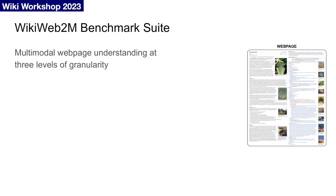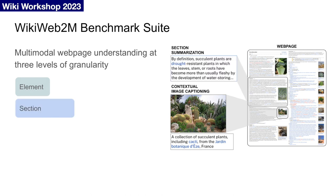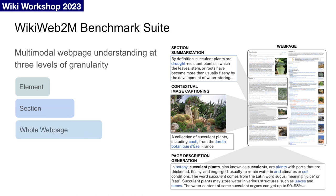With our new WikiWeb2M dataset of multimodal webpages, we need to define a benchmark suite of downstream tasks. Specifically, we define multimodal webpage understanding tasks at three levels of granularity. First, at the element or local level, we propose contextual image captioning, where we need to generate a caption given an image and the remaining webpage context. Then, at an intermediate or section level, we can do section summarization, where we need to generate a single-sentence summary for a section given its content and the remaining webpage context. Lastly, at a global or whole-page level, we can perform page description generation, where given the entire webpage, we want to generate a relevant description.